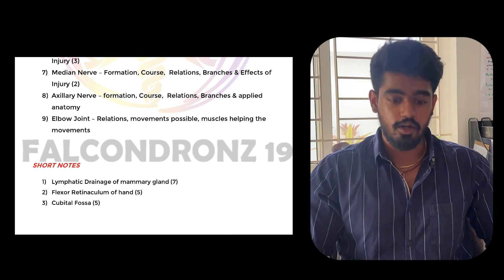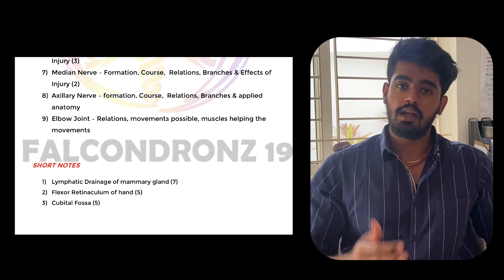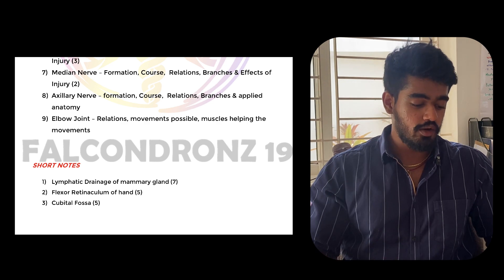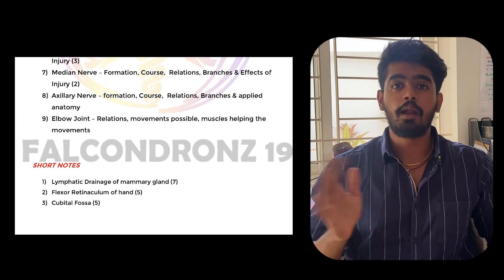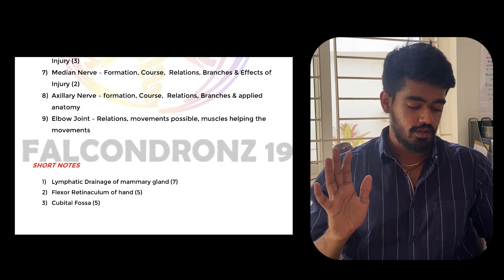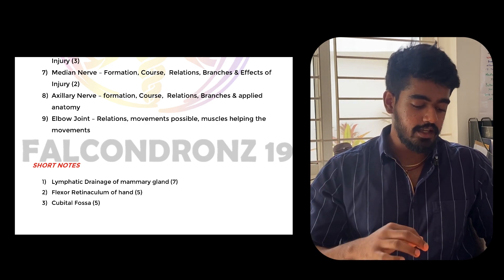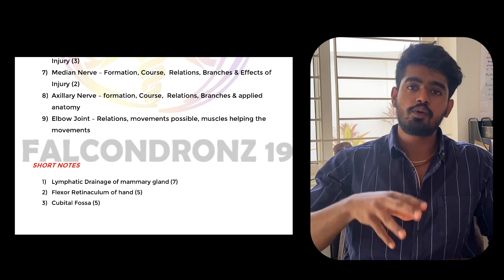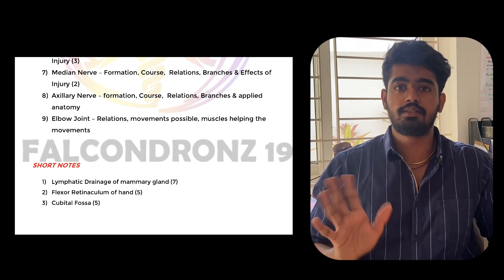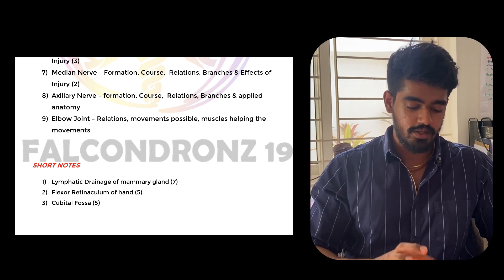Important short notes for upper limb are: lymphatic drainage of mammary gland, flexor retinaculum of hand, cubital fossa, lumbricals of hand, and axillary nerve. As you can see, most of the questions will be covered in the essay itself — so this is a very big plus point.